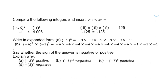Say whether the sign of the answer is negative or positive, and explain why. Negative 3 to the power of 6 — the answer will be positive, because 6 is an even number. Negative 5 to the power of 11 will be negative, because 11 is an odd number.